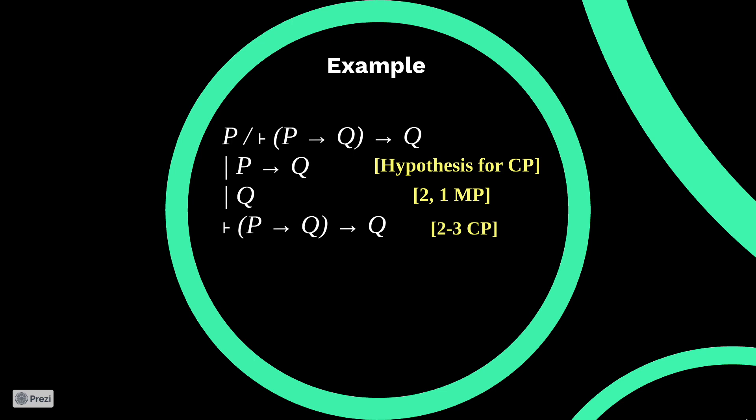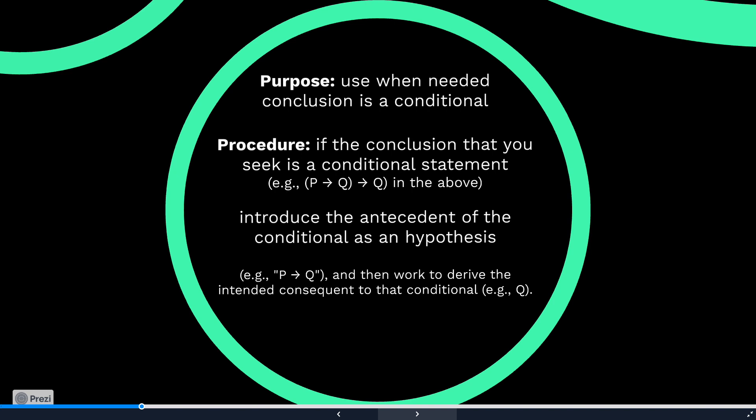We can use a conditional proof any time the conclusion we need is a conditional. The way we go about this is to introduce the antecedent of that conditional as a hypothesis, and then work to derive the intended consequent.